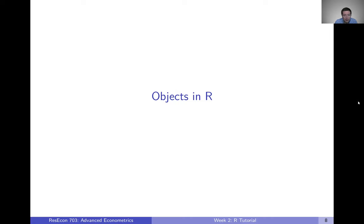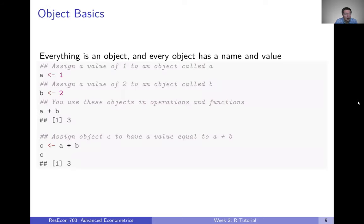In this video, we're going to talk about objects in R — what kind of objects you're going to use and encounter as you're working in R. The first thing to keep in mind when I use the word 'object' is that in R, everything is an object and every object has a name and a value.